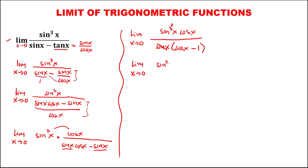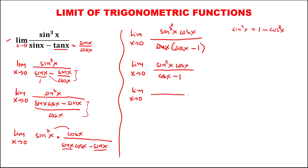Since we can cancel sine x, we get sine to the power 2x times cosine x. So we now have the limit as x approaches 0 of sine squared x times cosine x over cosine x minus 1. Since sine squared x equals 1 minus cosine squared x, we substitute, and this becomes 1 minus 1.